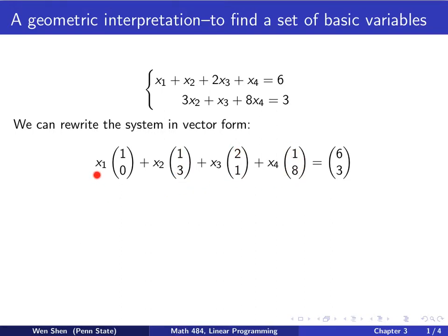I have x₁ multiplied by the coefficient here is 1, 0. x₂, coefficient is 1, 3, that's what I have here. And for x₃, I have 2, 1. And then for x₄, I get 1 and 8, equal, the right-hand side is 6, 3. So I write this as the xᵢ's are scalar numbers, multiply by this vector, which are constants, and then I add them up, and equal to this vector. I use this to express equivalently this equation.